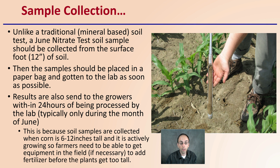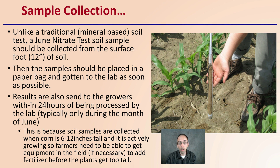Results are sent to growers within 24 hours of being processed by the lab, typically only during the month of June — that's why it's typically called the June Nitrate Test. Soil samples are collected when corn is about 6 to 12 inches tall and actively growing. Farmers need to be able to get equipment into the field, if necessary, to add fertilizer before the plants get too tall, which is why the lab has such a quick turnaround time.